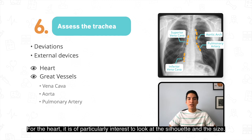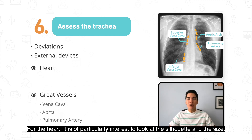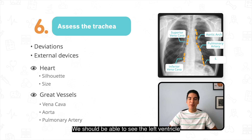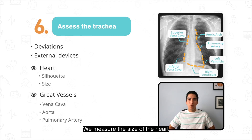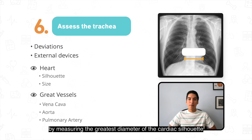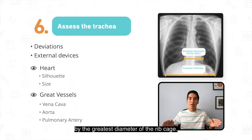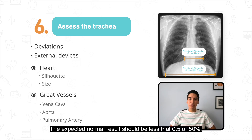For the heart, it is of particular interest to look at the silhouette and the size. We should be able to see the left ventricle and the right and left atrium. We measure the size of the heart by dividing the greatest diameter of the cardiac silhouette by the greatest diameter of the ribcage. The expected normal result should be less than 0.5, or 50 percent.